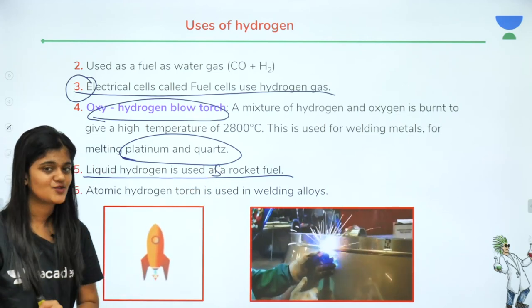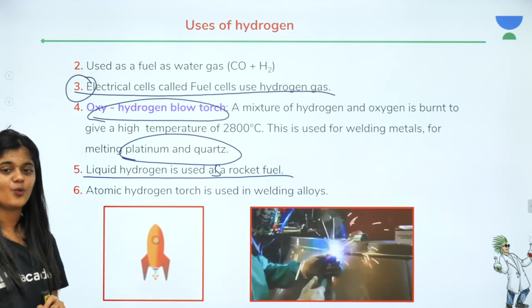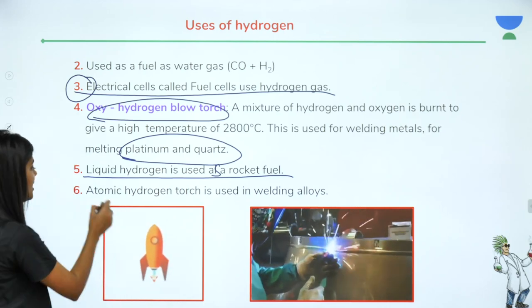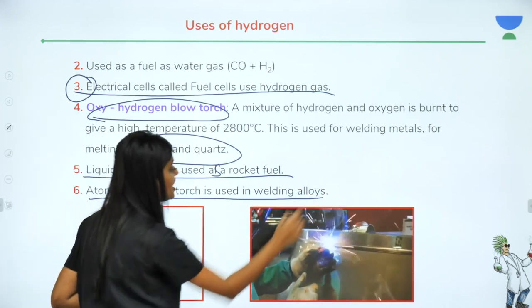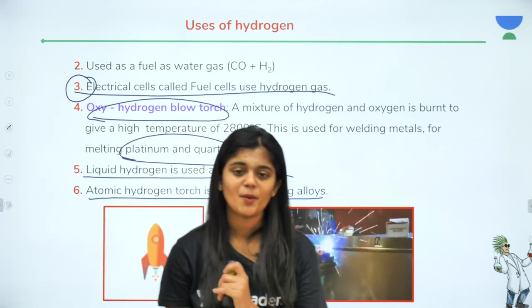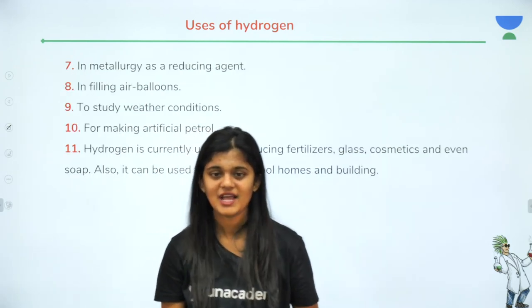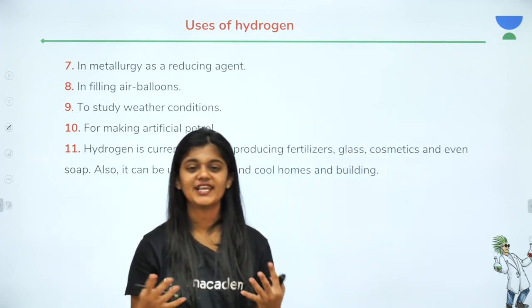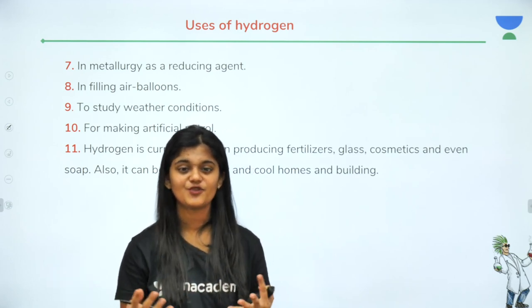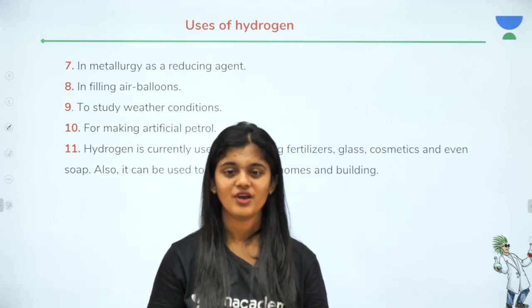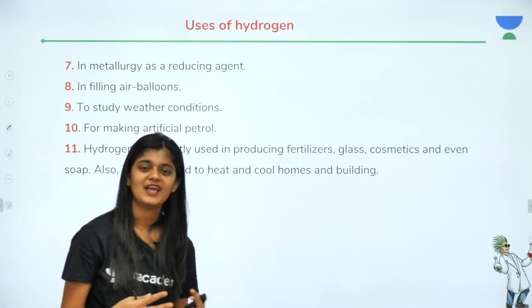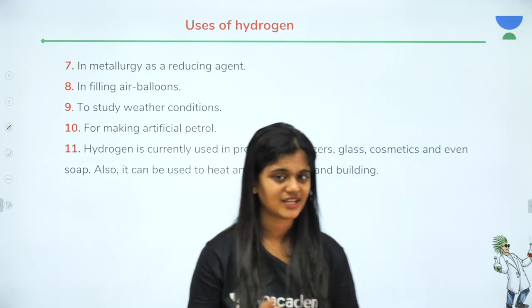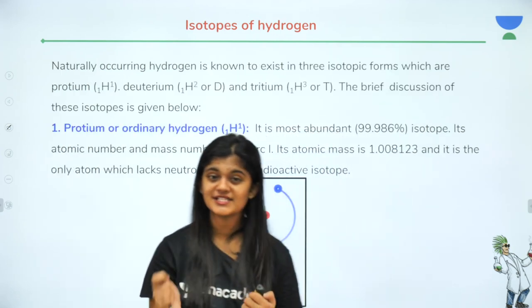Ninth: liquefied hydrogen is used as rocket fuel — one of the fuels in rockets. Tenth: atomic hydrogen torch is used in welding alloys. Other uses include use as a reducing agent, filling air balloons to study weather conditions, and making artificial petrol. There are many applications of hydrogen.